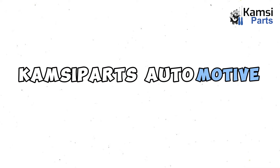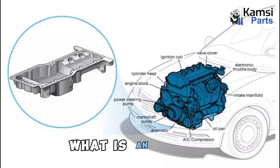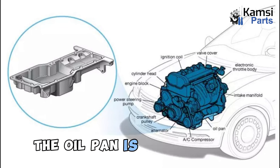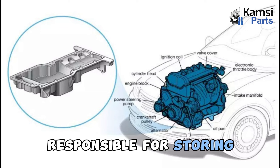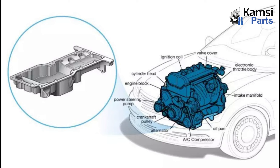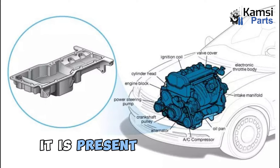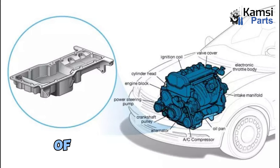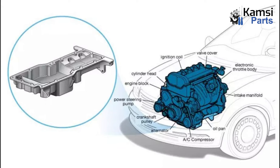Welcome to Camps Aparts Automotive Ltd. Today, we will be talking about the engine oil pan. What is an oil pan? The oil pan is a component responsible for storing the oil that lubricates the engine, with a simple bath-shaped design. It is present in all types of combustion engines, whether diesel engines or petrol engines.